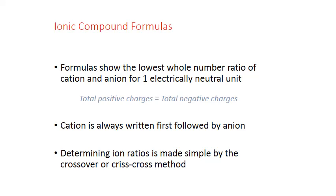The total positive charges of the cations present must equal the total negative charges of the anions. The formulas always follow the same format: the symbol for the cation is written first, followed by the anion. Subscripts on the formula for each ion indicate the lowest whole number ratio between them.